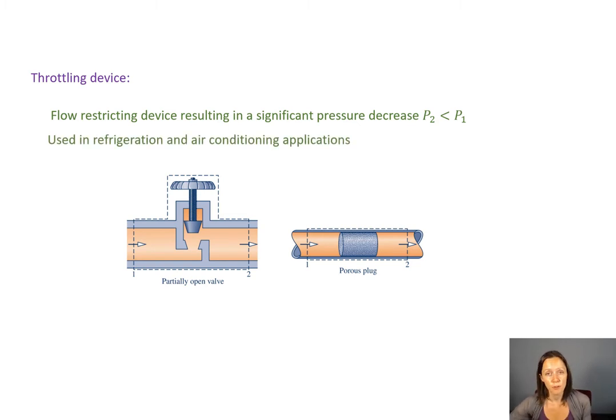These are commonly used in refrigeration and air conditioning applications. And in this class, no matter what the design of the throttling valve itself is, this is the schematic that I'm going to use. Essentially, an X with the ends kind of capped, or two triangles put together like that.